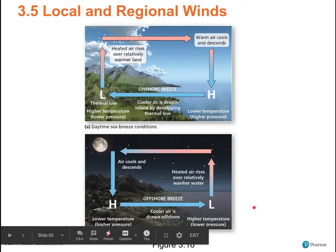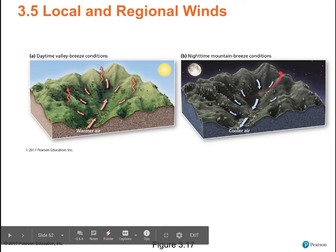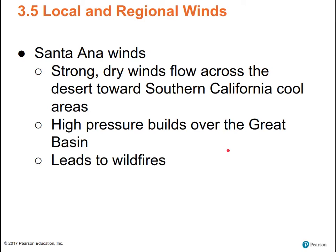The mountain-valley breeze follows the same pattern. During the day, the ground gets warm, so the air flows uphill. At night, the ground cools off, the air next to the ground gets cooled, becomes more dense, and flows downhill. This is the same situation that creates Santa Ana winds in Southern California. In the fall, they get strong dry winds flowing out of the desert towards the coast. High pressure builds over the Great Basin, typically leading to wildfires. By the time of Santa Ana winds in the fall, it hasn't rained since March, everything is really dry, and these strong, dry winds spread wildfires in a really dangerous way.